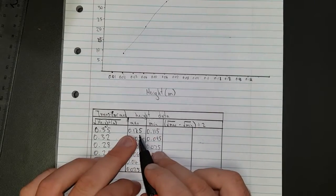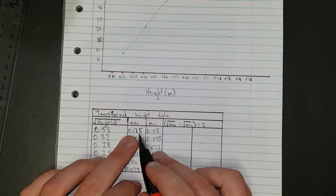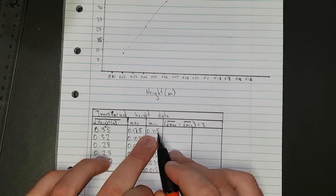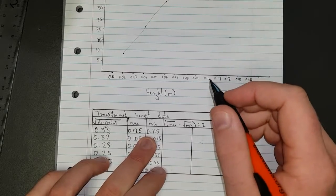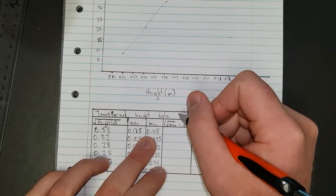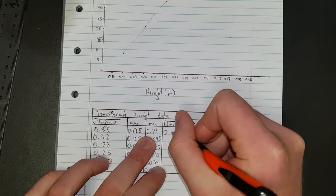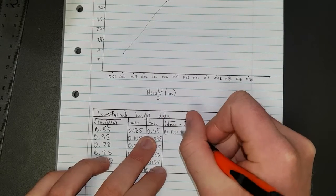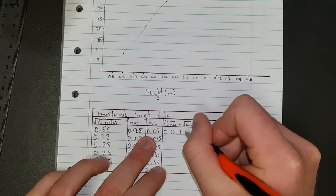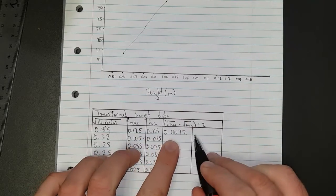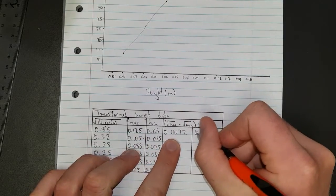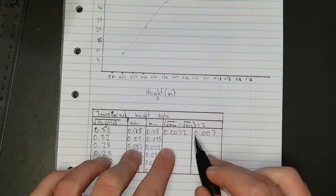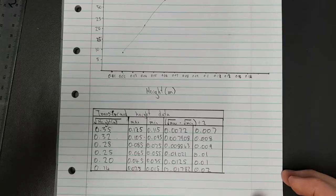So we'll do the first one. We're going to have √0.125 minus √0.115, divided by 2, and that gives me 0.0072. Rounding this, that's just going to be 0.007. I'm going to pause the video and do the rest, and then we'll have a discussion.